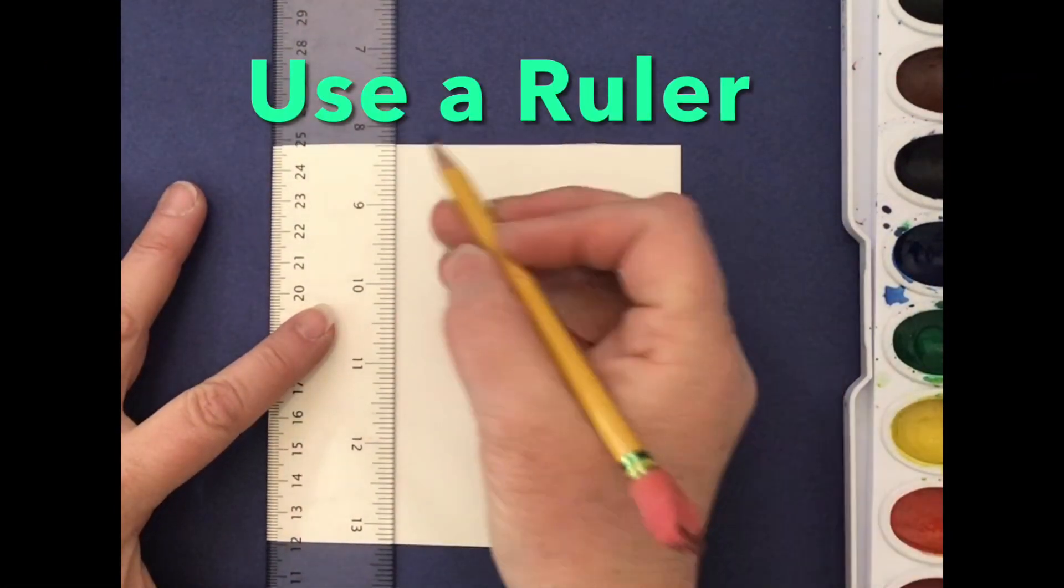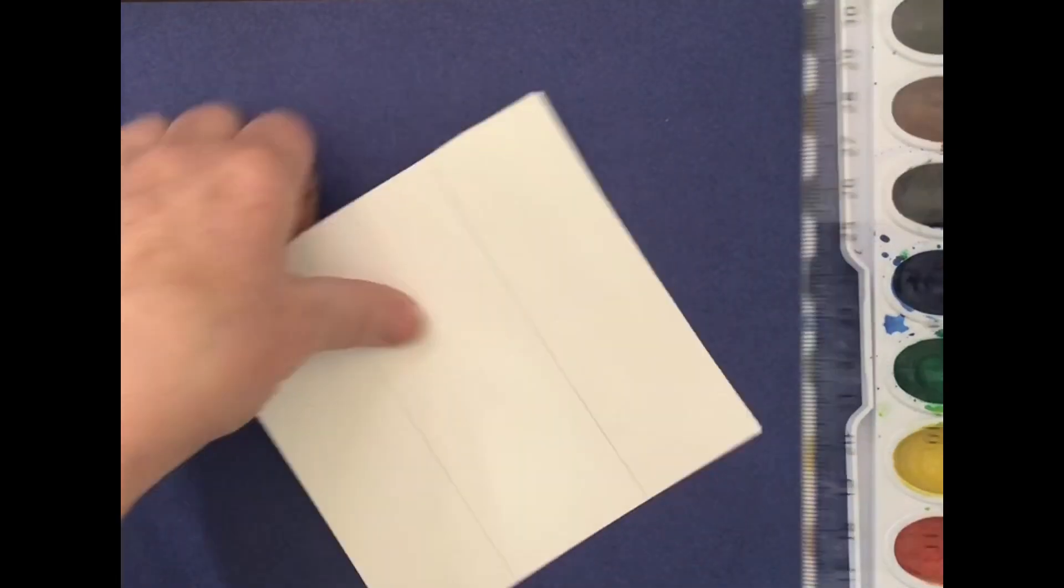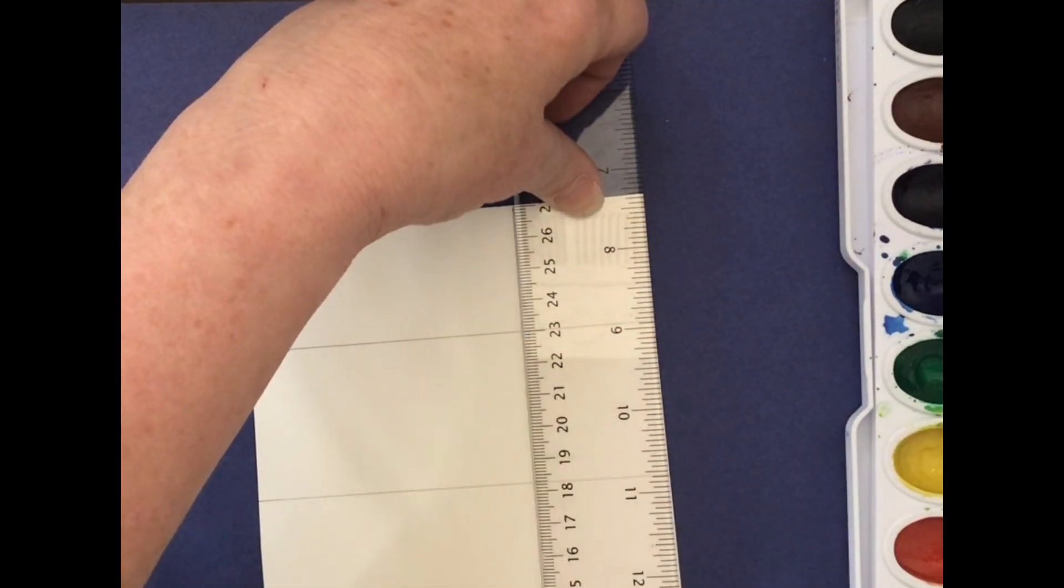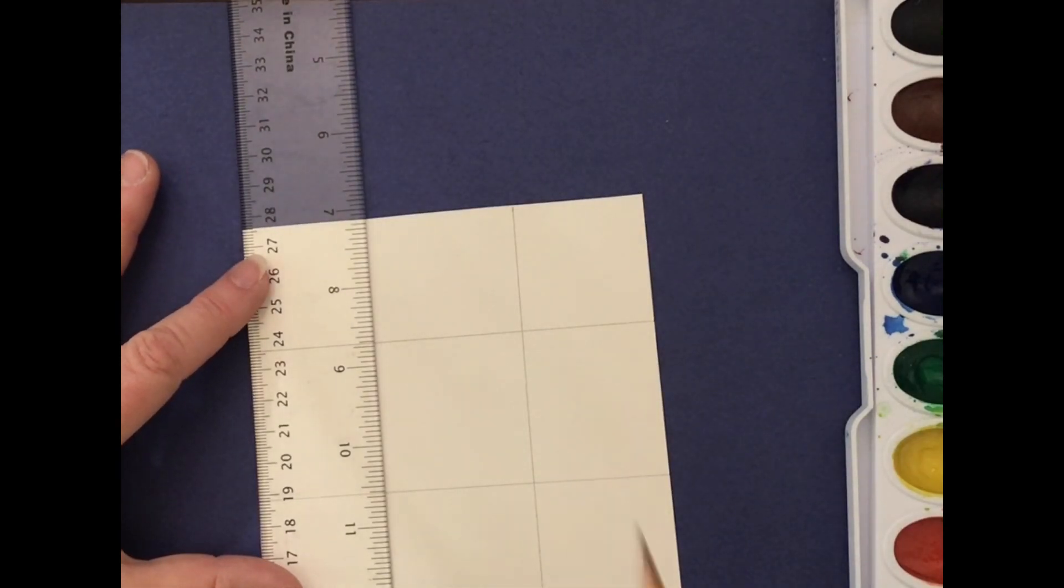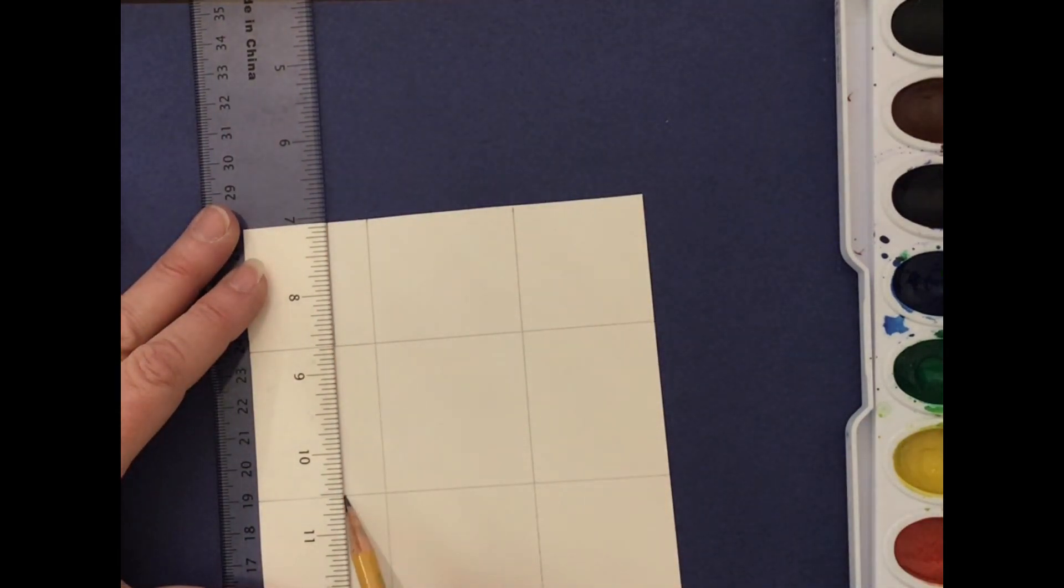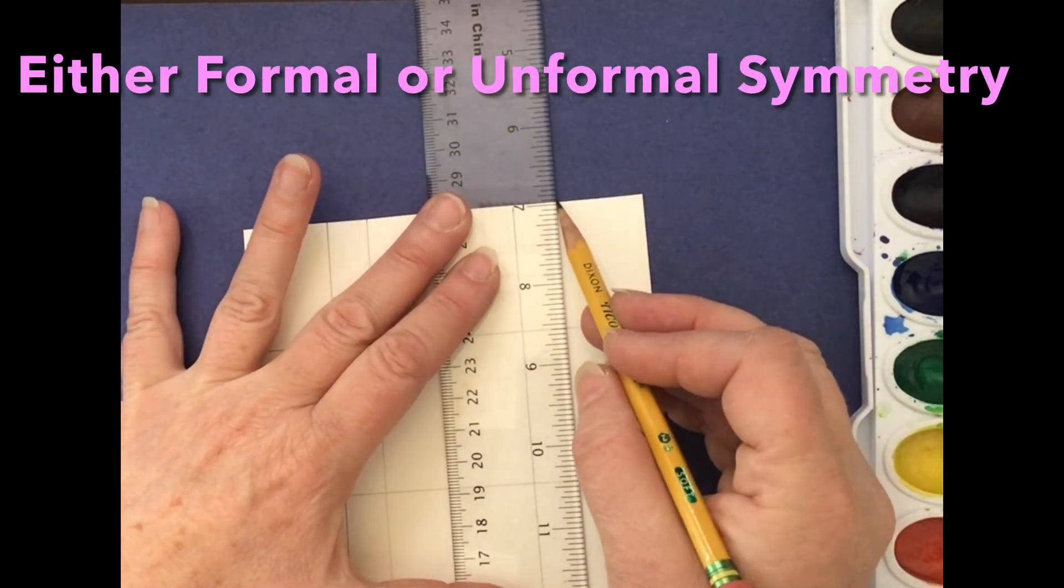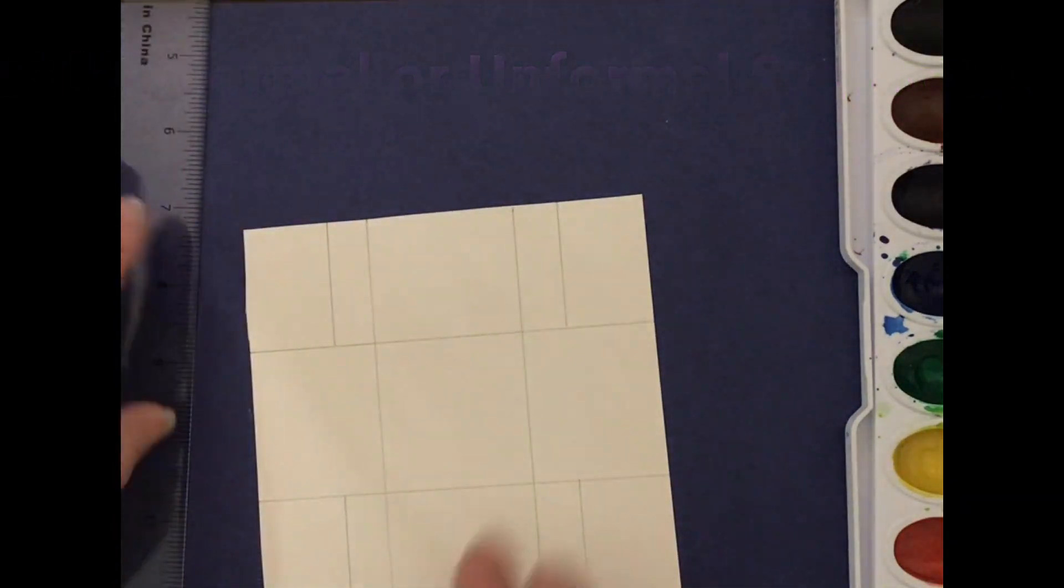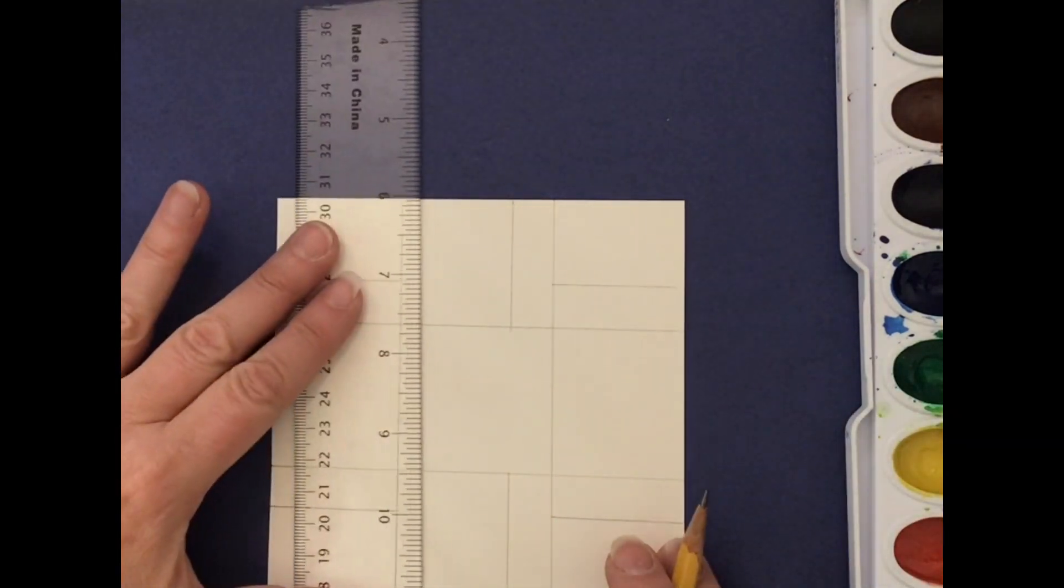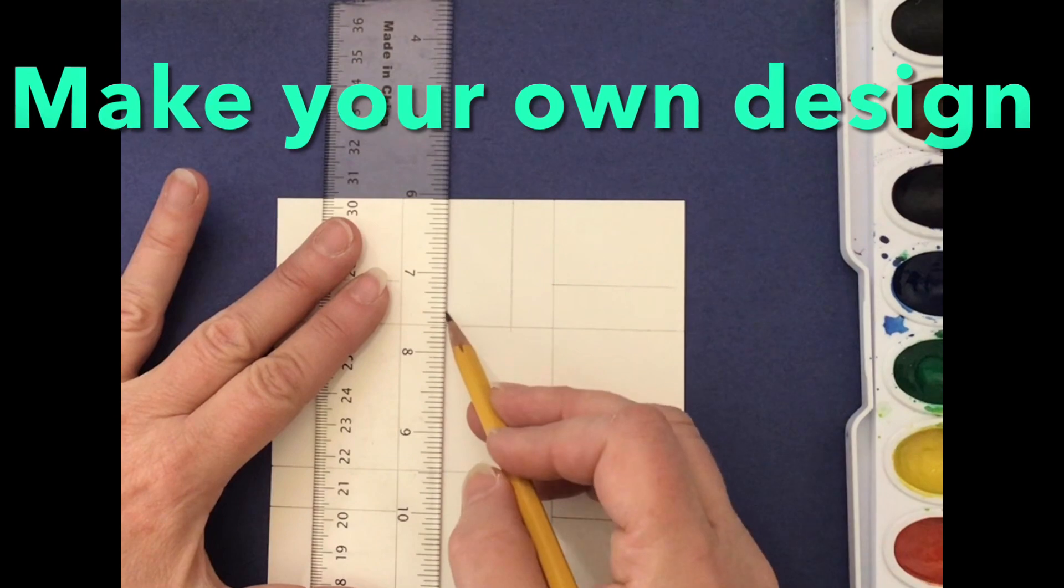Make sure it's a square. I found that easier. I'm using the width of the ruler to make some shapes. Whatever it takes to kind of break this up into some smaller shapes really helps you get started. I think I'm going to be using formal symmetry, which is basically symmetrical. Asymmetry is informal, but I made a few mistakes so it's a little informal.